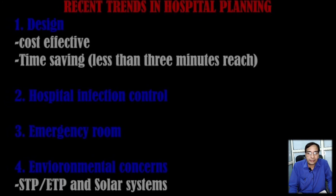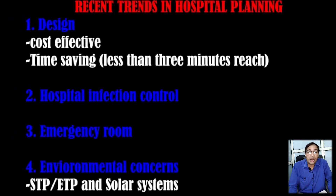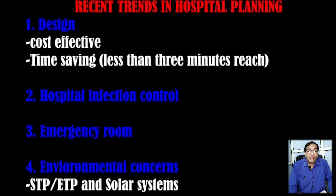Recent trends in hospital planning: First is design — you should build a cost-effective, time-saving delivery method. All departments should be within a 3-minute reach. Infection control should be a top priority in hospital planning after the COVID-19 pandemic to attract more patients. The emergency room will become a more focused area. Information technology is becoming increasingly important in medical records and healthcare service delivery. Finally, environmental concerns like STP, ETP, solar systems, and rainwater harvesting are becoming more important from a statutory point of view.